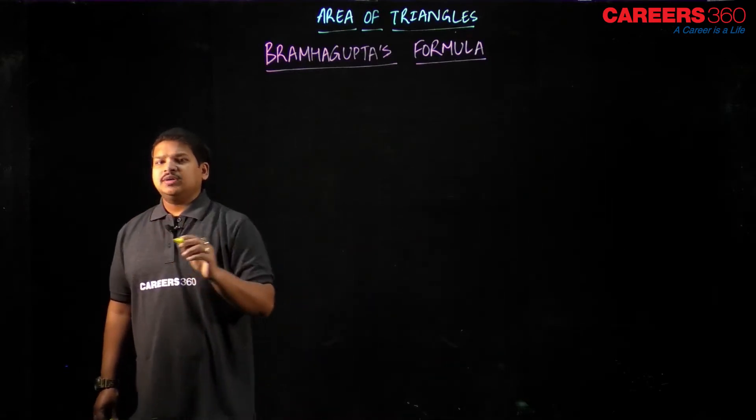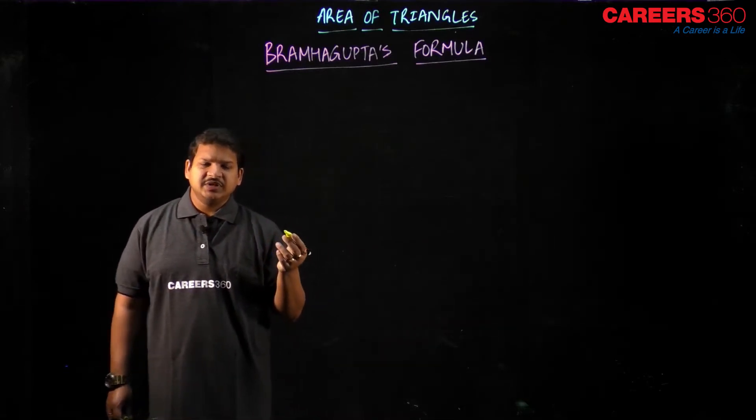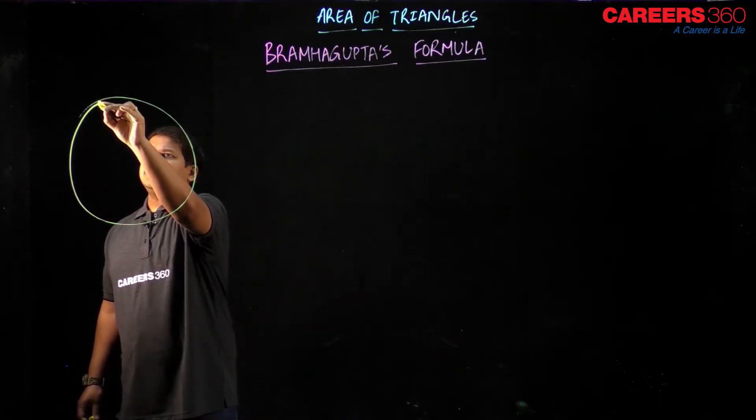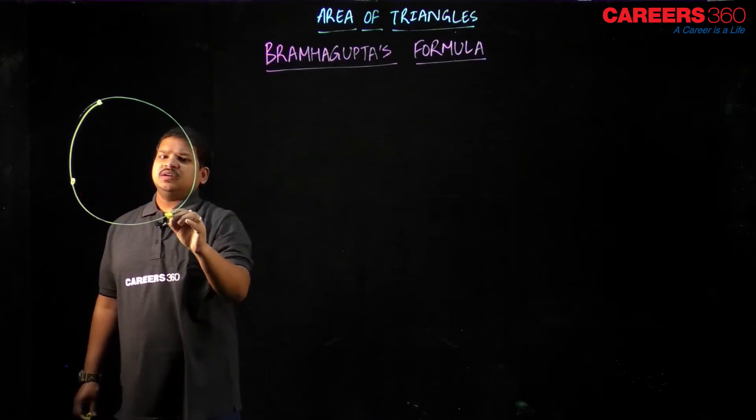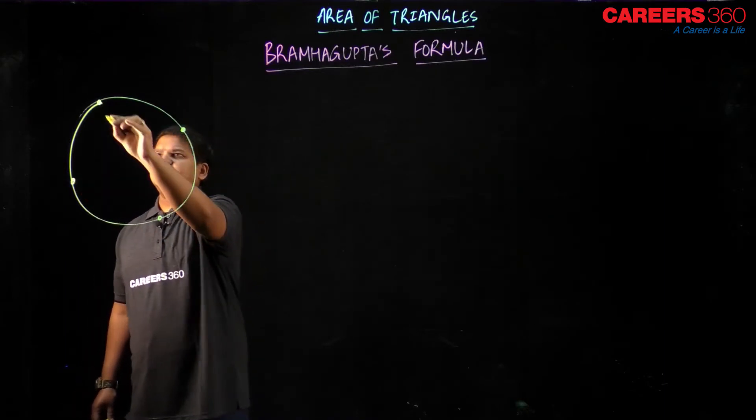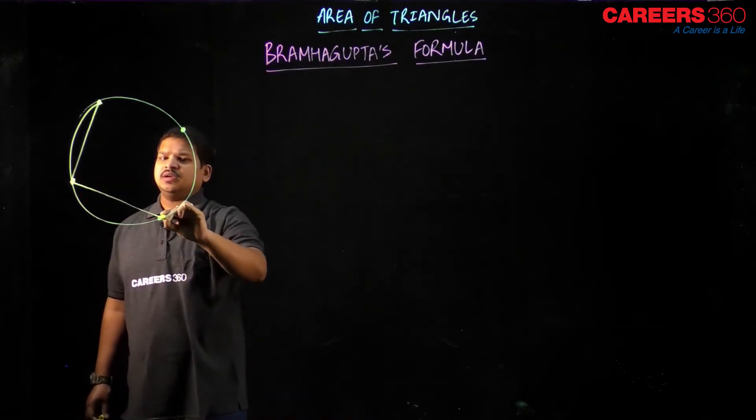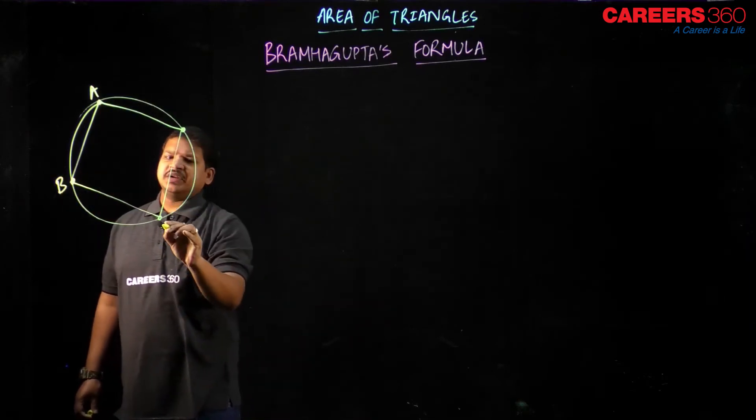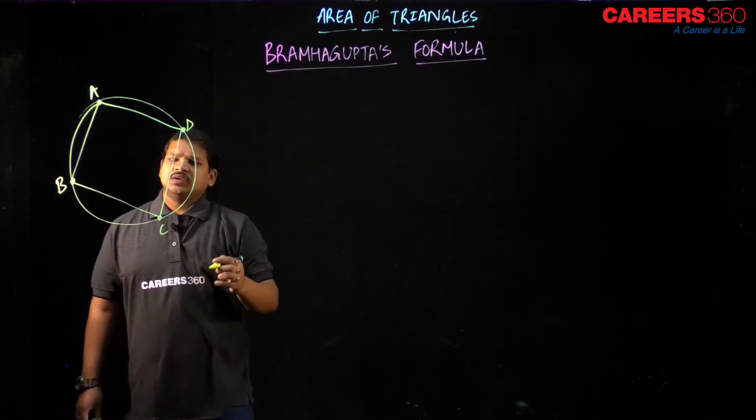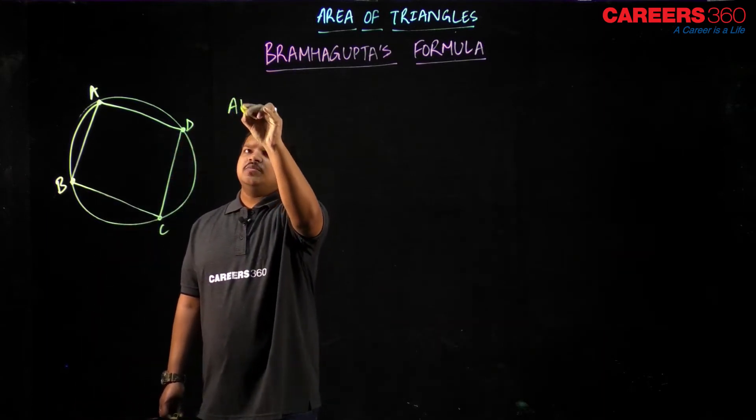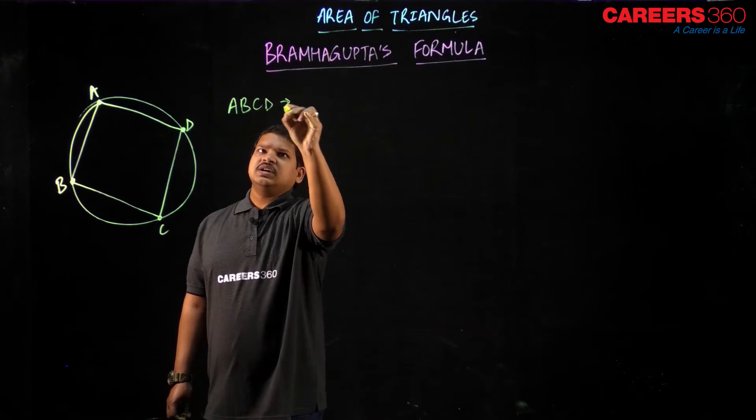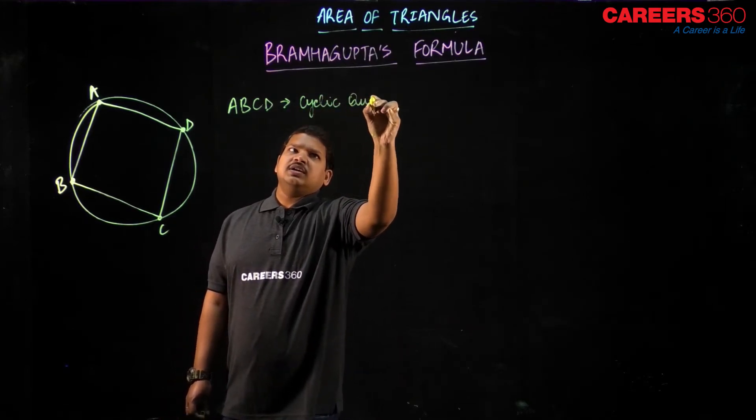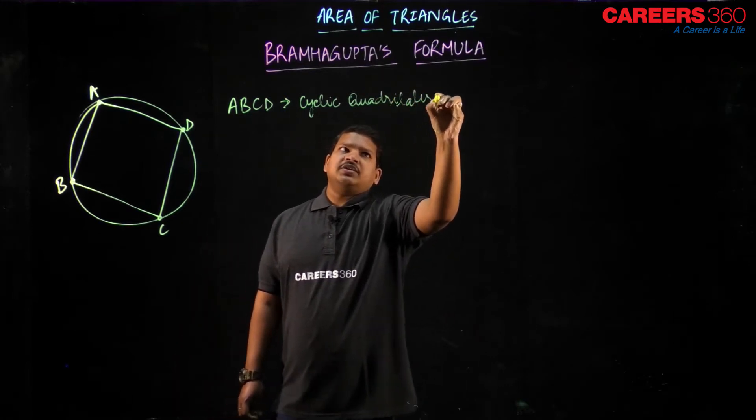So what our mathematician Brahmagupta has said, let us say this is a circle and let us say there are four points in a circle, and if we draw a quadrilateral in this, what I will be getting is A, B, C, D, which is a cyclic quadrilateral.